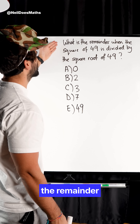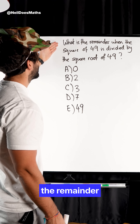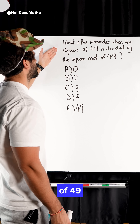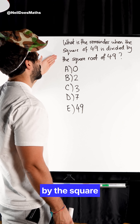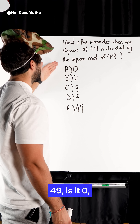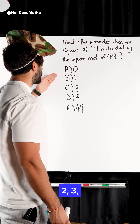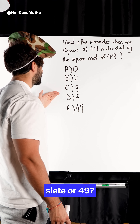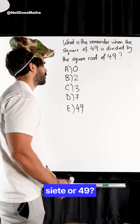It says: what is the remainder when the square of 49 is divided by the square root of 49? Is it zero, two, three, siete, or 49?